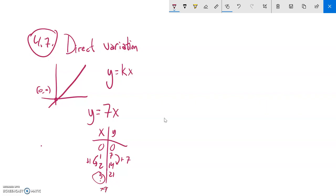You can also see it here: three times seven is twenty-one. So there's some examples.